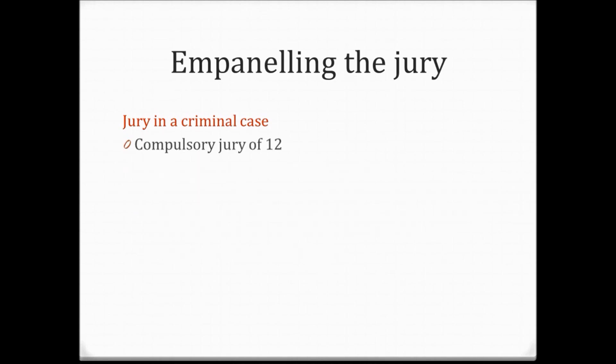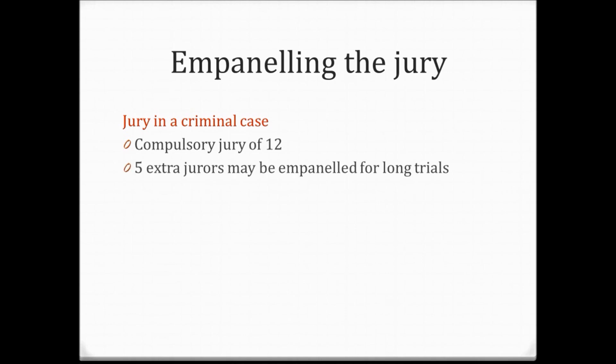In a criminal case, there's a compulsory jury of 12 for all criminal cases, and the state pays for the jury. Up to five extra jurors can be selected for long or complex trials. The trial can continue with as few as 10 jurors if a juror becomes sick, is unable to continue, or even dies. If the number drops below 10, the case needs to be retried.